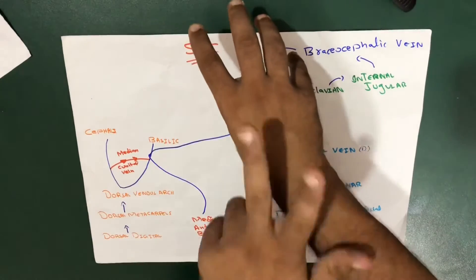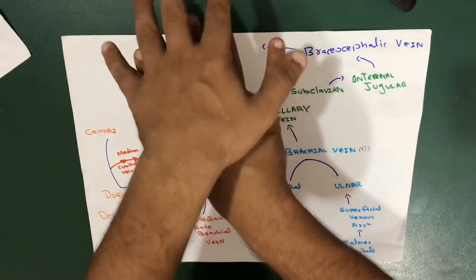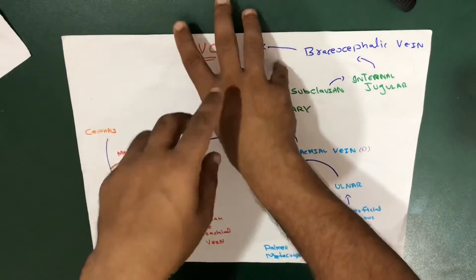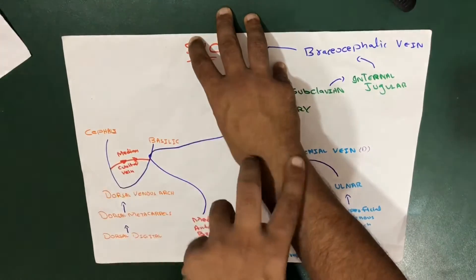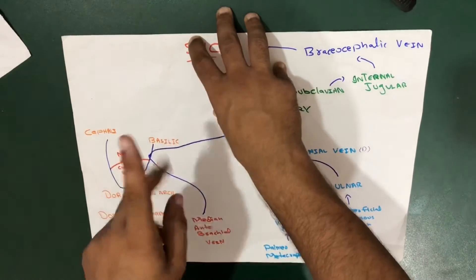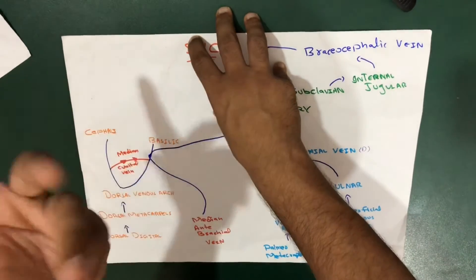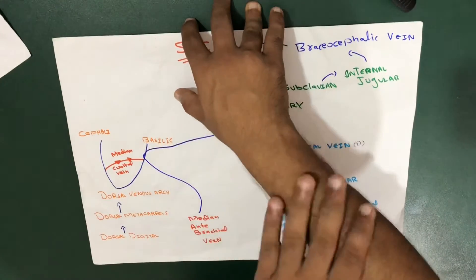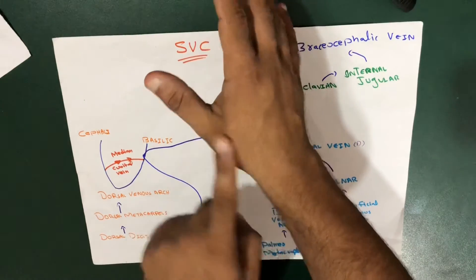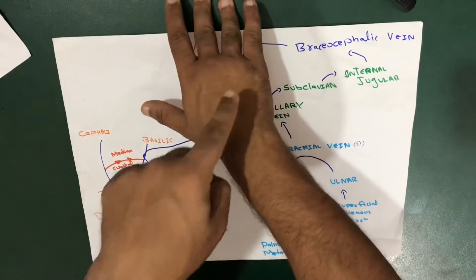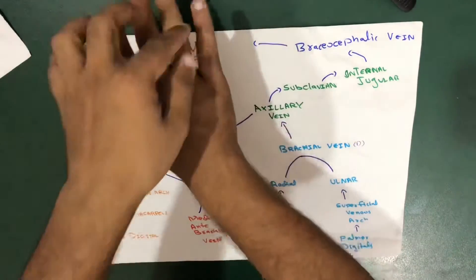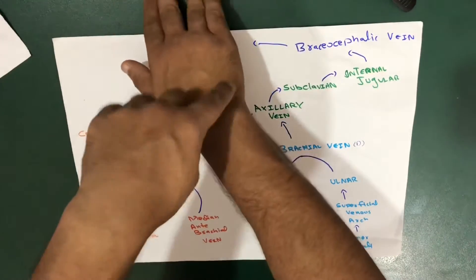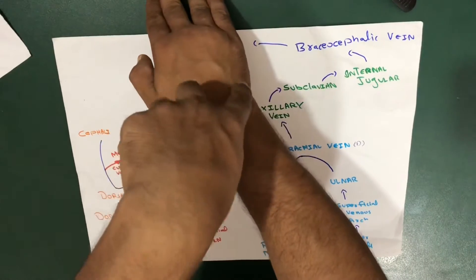From the dorsal venous arc, two important veins arise. When talking about veins, we go from distal to proximal — opposite to the artery. The two veins are the cephalic vein and the basilic vein. The cephalic vein is on the lateral side, and the basilic vein is on the medial side — the pinky finger side.